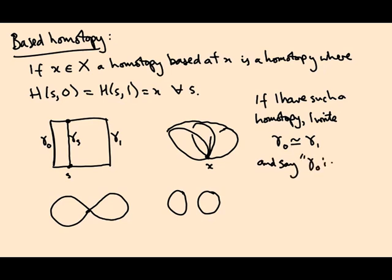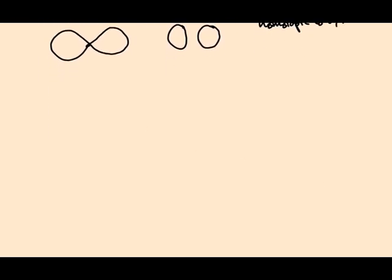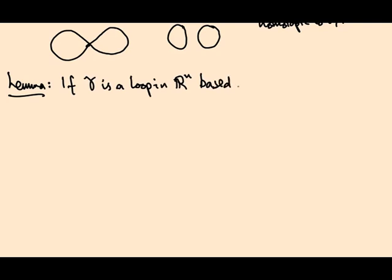So now let me prove something for you. I am going to prove that if gamma is a loop in R^n based at the origin, then gamma is homotopic, based homotopic, to the constant loop at zero.